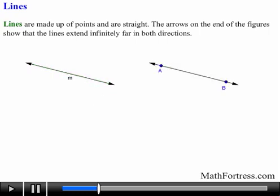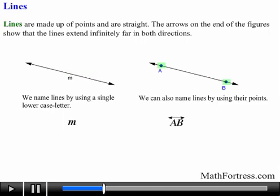The following figures are examples of lines. There are two different ways we can name lines. The first way is by using a single lowercase letter, such as line m. The alternative way to name lines is by using their points. For example, the line on the right contains the points A and B, so we can call the line AB. Using symbols, we can denote it like this, AB with a line on top.